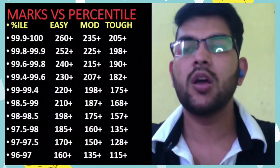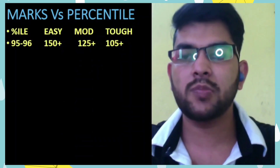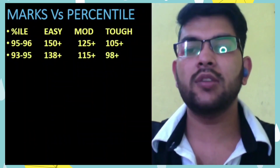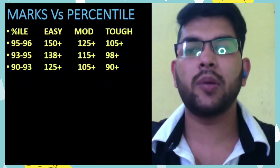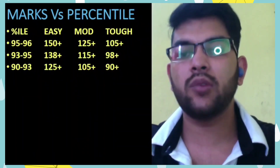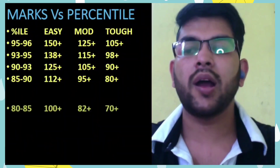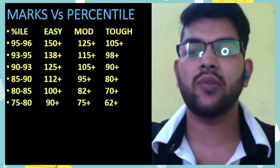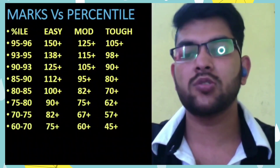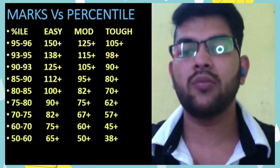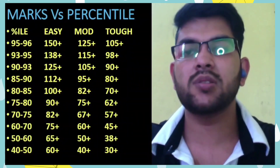For 95+ percentile, your score should be 125 or more. For 93+ percentile, marks would be 115+. For 90+ percentile, marks would be 105+ for moderate paper. For 85+ percentile, marks would be 95+. For 80+ percentile, 82+. For 75+, marks would be 75+. For 70 percentile, 67+. For 60 percentile, 60+. For 50+ percentile, 50 or more. For 40+ percentile, 40 or more. That is all about marks versus expected percentile for easy, moderate, and tough paper.